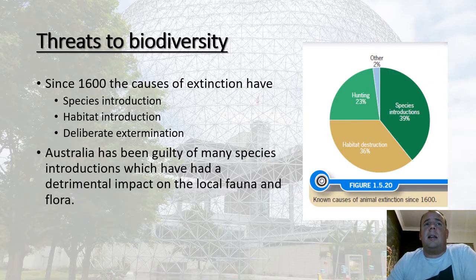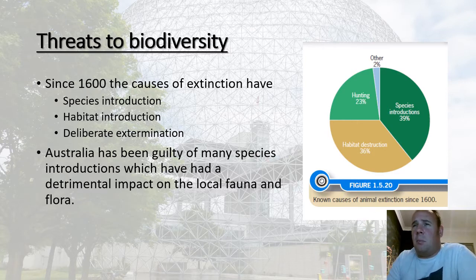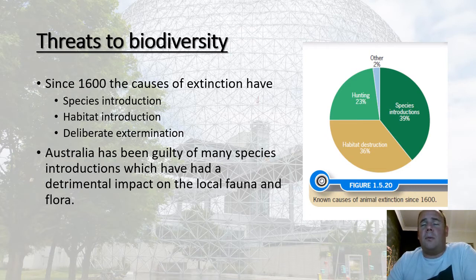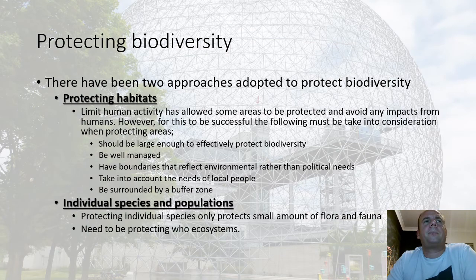Since around 1600, species extinction has been caused by three major reasons: species introduction, habitat destruction, and deliberate extermination. As shown in the pie chart, species introduction has caused more harm than vegetation clearance and habitat destruction — which may surprise people. Hunting is also significant. Australia has been guilty of many harmful species introductions — cane toads, rabbits, foxes, and cats — all of which have had massive impacts on local fauna and flora.